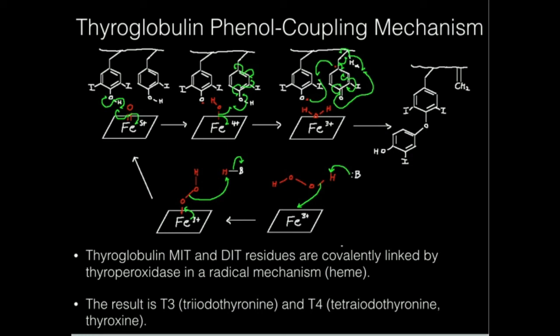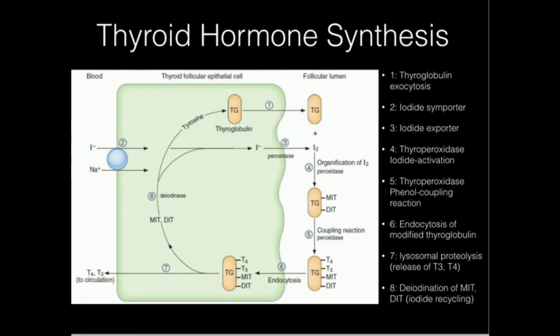All of this occurred while still attached to thyroglobulin. The thyroglobulin is then brought back into the follicular cell, where lysosomal degradation cleaves off any T3 and T4, which are released into the blood as hormones. The remaining DITs and MITs, along with their iodide, are then recycled.